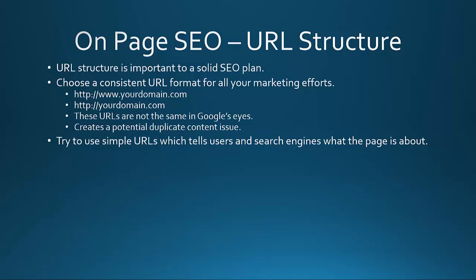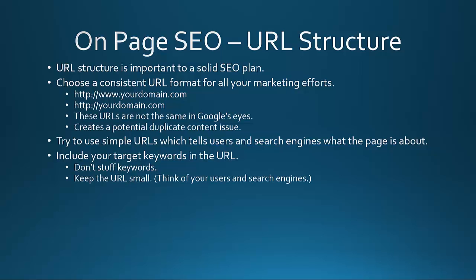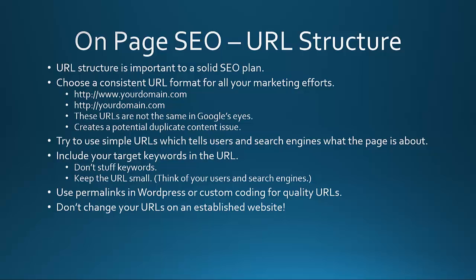Try to use simple URLs that tell users and search engines what the page is about. Include your target keyword in the URL if it makes sense — that will actually show up bolded in Google's search results. Don't stuff keywords if it doesn't make sense. Keep the URL short, and think of your users and the search engines. Use permalinks in WordPress or custom coding to have clean, quality-looking URLs.